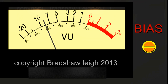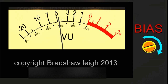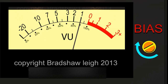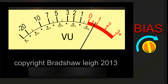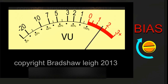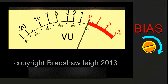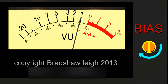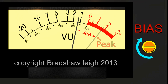Now slowly turn the bias level up. As you turn the bias level up, the level will rise and then begin to fall. Keep turning it up, note where the peak is, but keep turning the bias level up slowly until the level falls the amount that you want to over-bias — in this case, 3 dB.